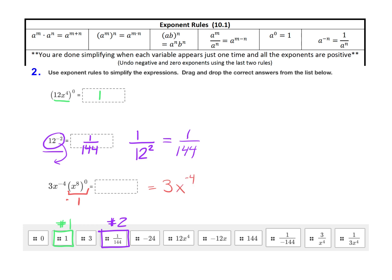But for our final answer, we do not want to have a negative exponent. So we need to undo the negative exponent. Notice though that the negative exponent is only on the x. It's not connected to the 3 because there's no parentheses around 3x. Therefore, the only piece that needs to move is that x to the negative fourth.